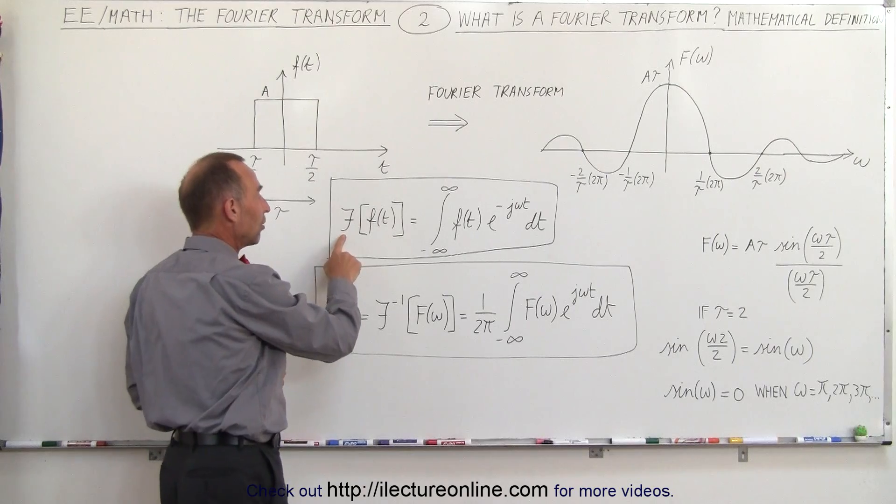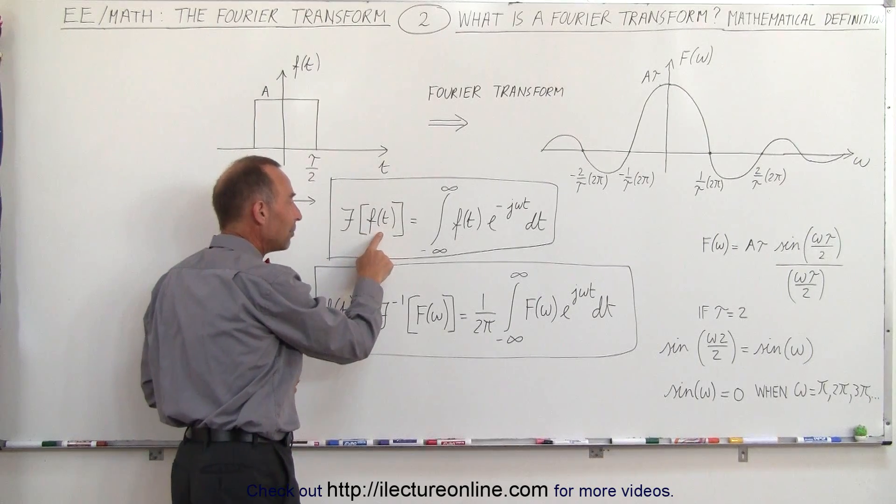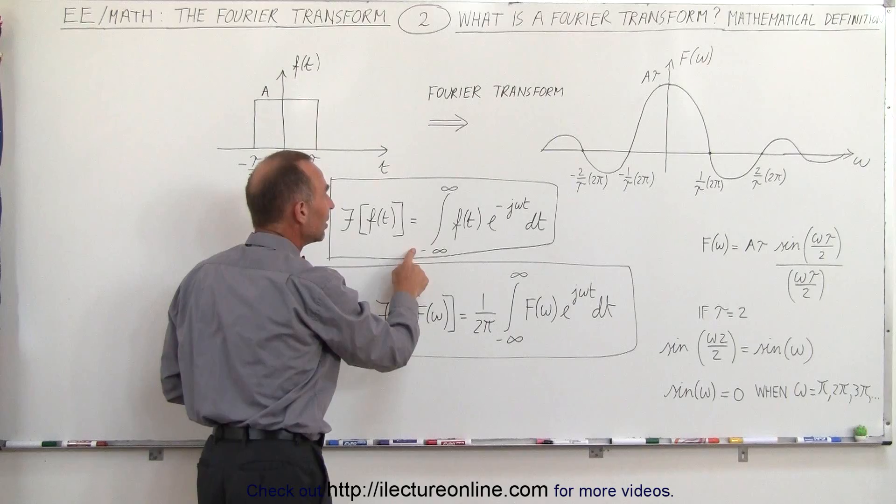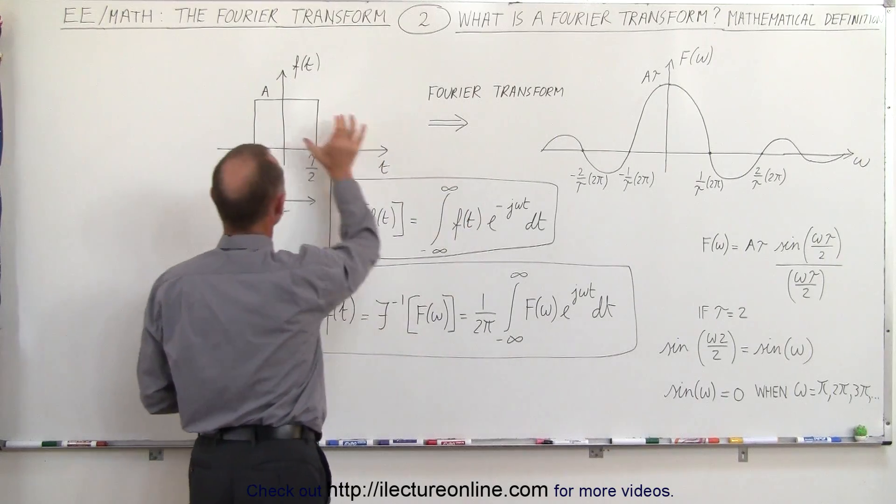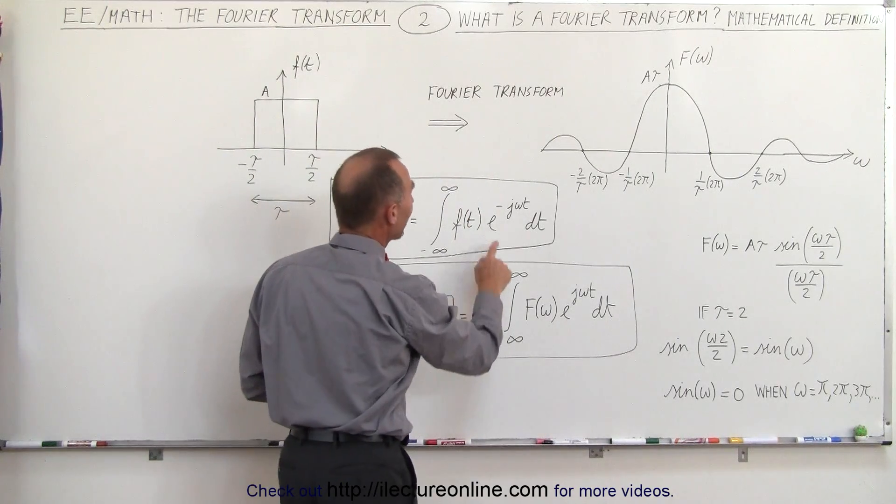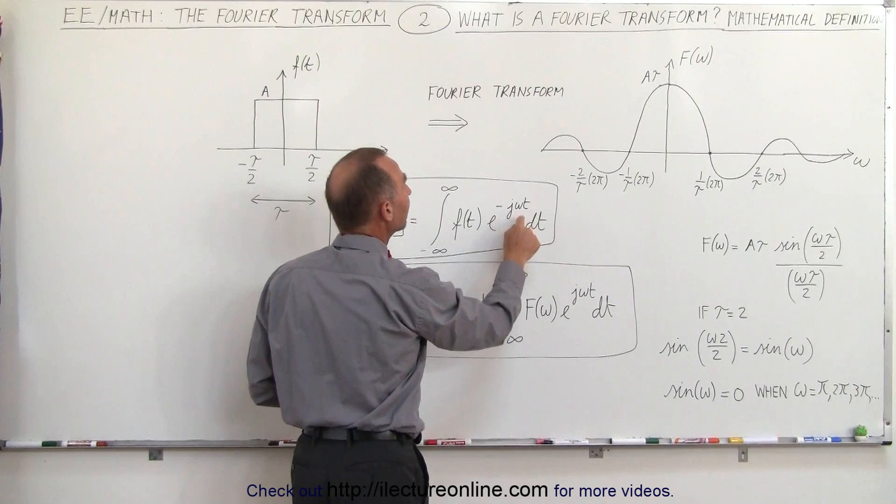When we take the Fourier transform of a function in the time domain that is equal to the integral from minus infinity to infinity of the function f(t) right here times e to the minus j omega t dt.